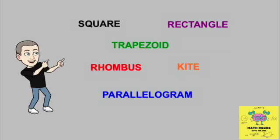Welcome back to another math video here at Math Rocks with Mr. Cox. This video is taking a look at all the different quadrilateral shapes like a square, rectangle, trapezoid, rhombus, kite, parallelogram, and others. But moving past their actual definitions and into what we call their properties, which are other things that are true about these shapes not included in the definition. To do that, we're going to be looking at how we prove triangles to be congruent and from there we can actually discover what these other properties are. So stick around and find out how this all comes together. Let's get it on!